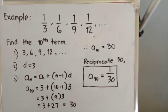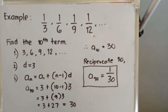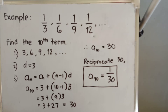Again, take note: when solving harmonic sequence problems, you always have to convert the sequence first into arithmetic sequence. Then afterwards, you only have to get the reciprocal of the term to get the correct answer. And that is all about harmonic sequence.